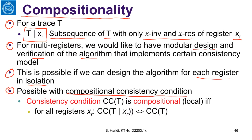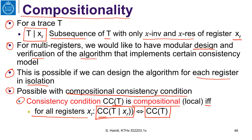Let us define what it means for a consistency condition to be compositional. A consistency condition on traces is compositional if and only if, for any register, if we restrict the trace to that register and prove that the restriction satisfies the consistency condition, then the consistency condition will be satisfied for the whole trace.